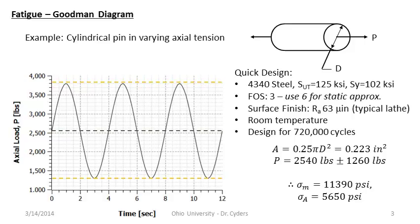We're going to look at the interplay of these two variables. First, we go through the SN diagram as we would for a fully reversed case — where there's no mean stress. If we had nothing but the alternating stress, we could simply compare that to the SN diagram. But the Goodman diagram helps us determine the effect of the elevated mean stress, which keeps a tensile stress on the microcracks trying to open them up — essentially causing faster failure.